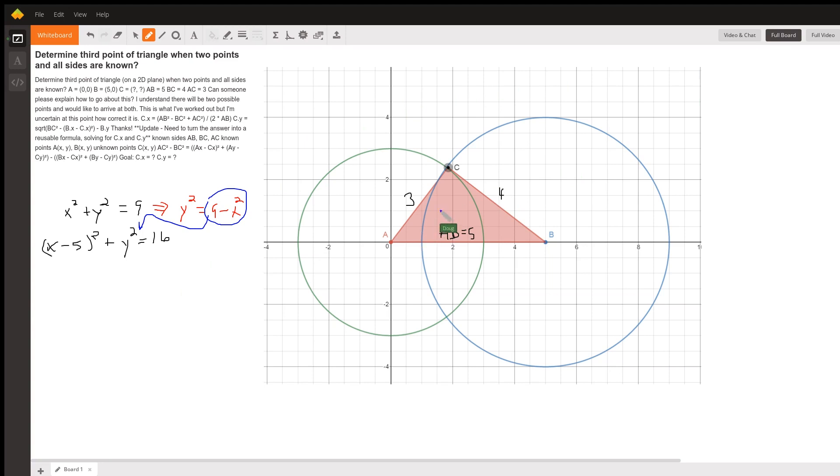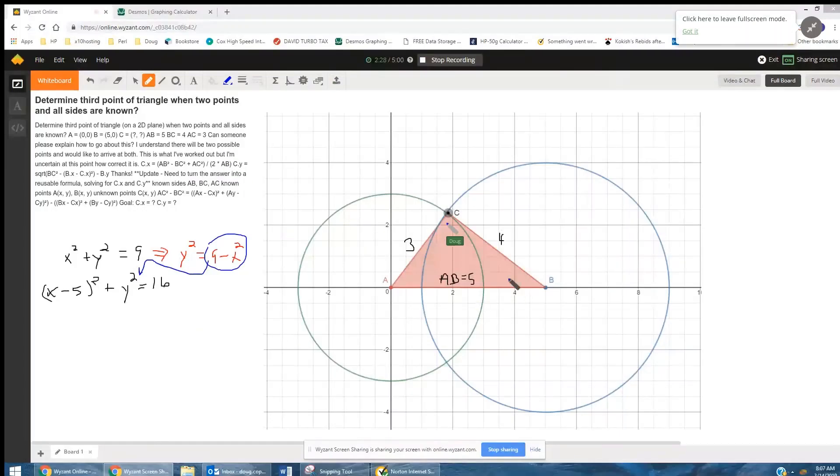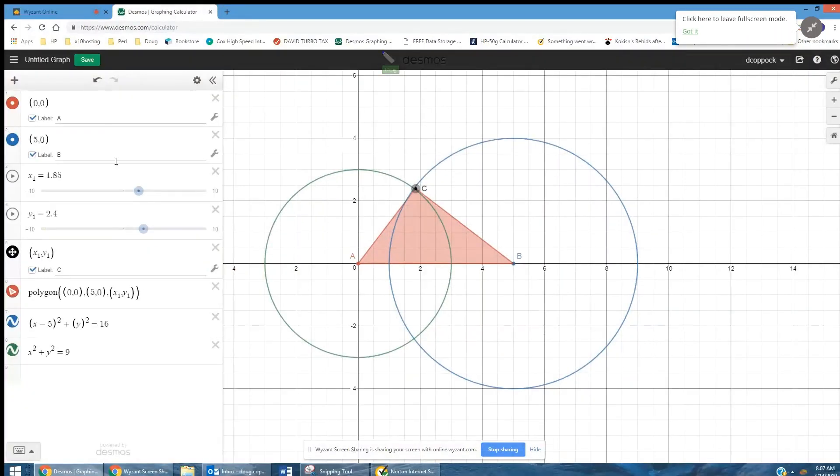Let me share my screen and show you where I got this graph. Here's the point 0, 0. B is 5, 0.